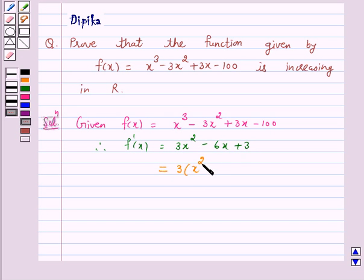3(x² - 2x + 1), and this is again equal to 3(x - 1)².